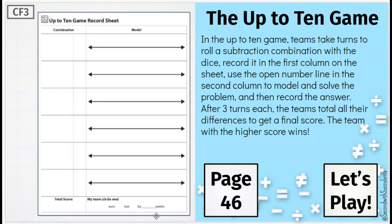Here's how it works. In the Up to 10 game, teams take turns to roll a subtraction combination with the dice. We'll record it in the first column on the sheet, and then use the open number line in the second column to model and solve the problem. Then we'll record the answer. After 3 turns each, the teams total all their differences to get a final score. The team with the higher score wins. Let's play.